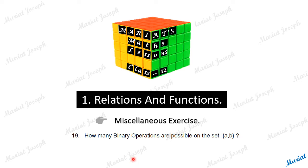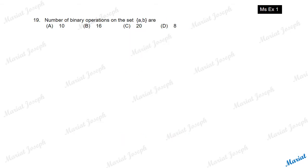How many binary operations are possible on a set having two elements? Is it 10, 16, 20, or 8? Let's check.